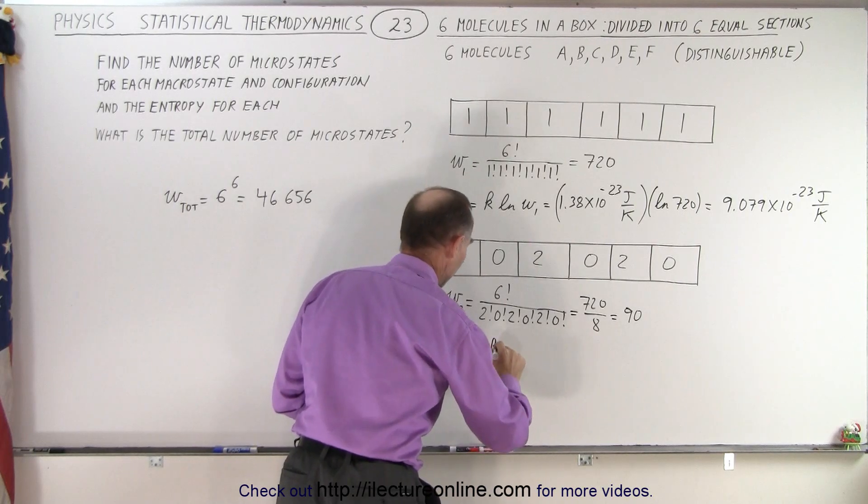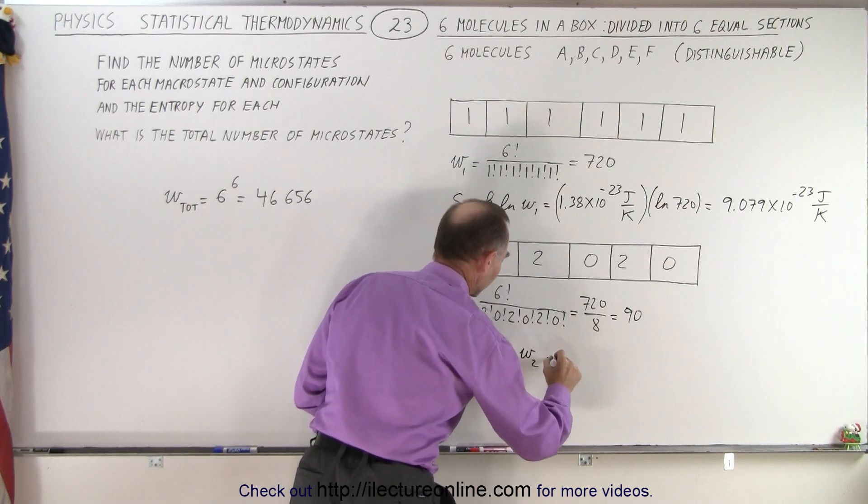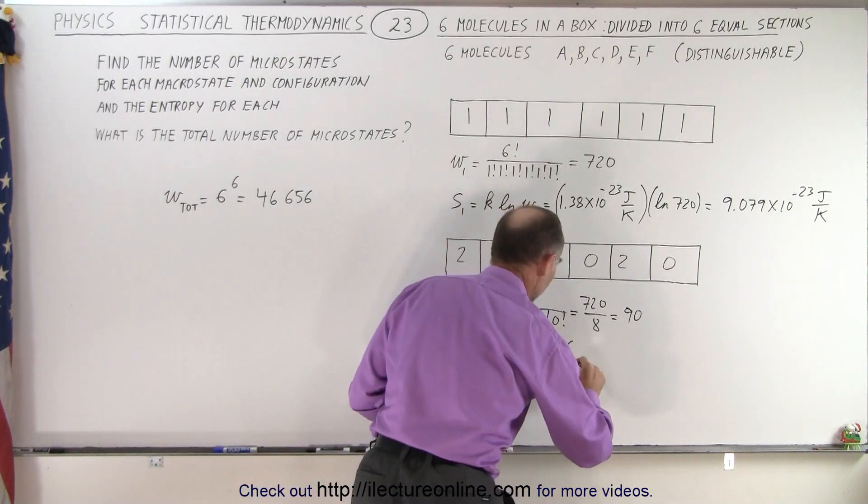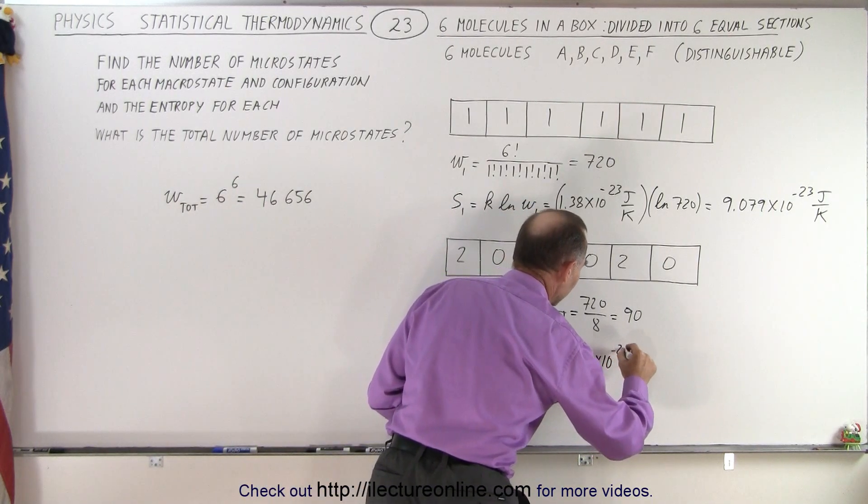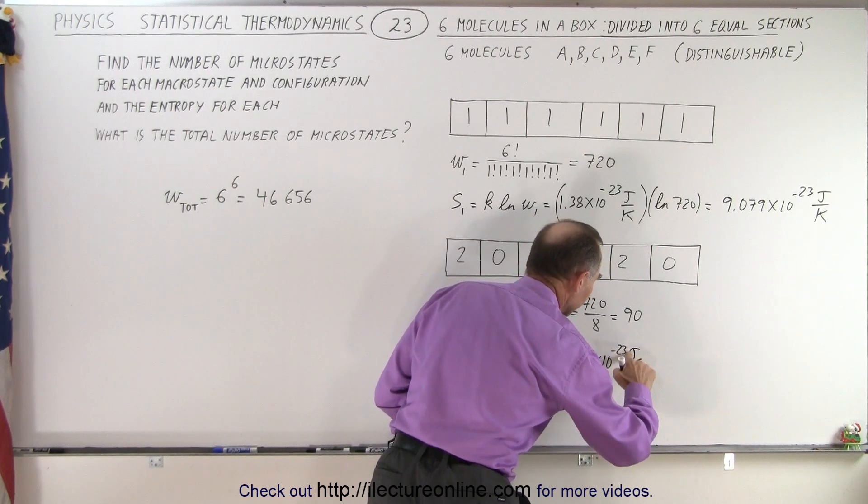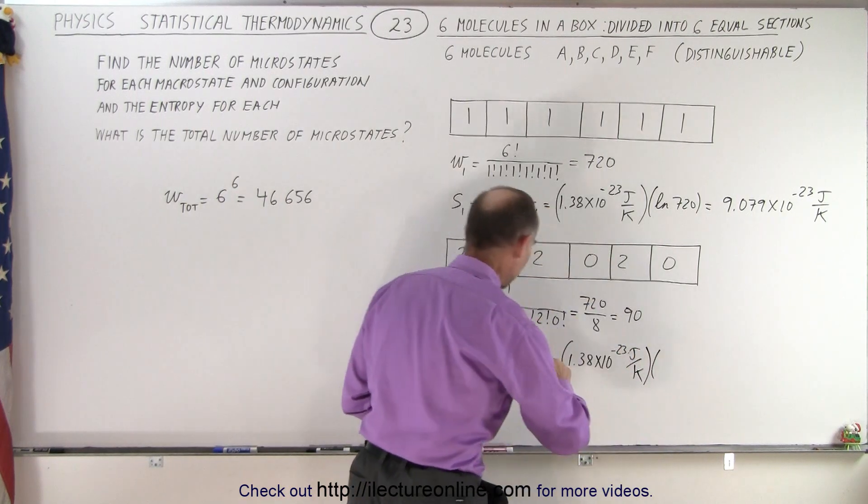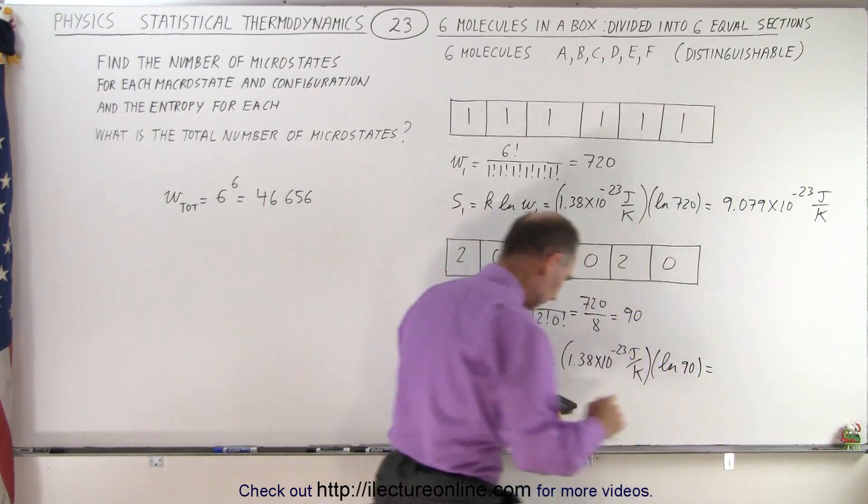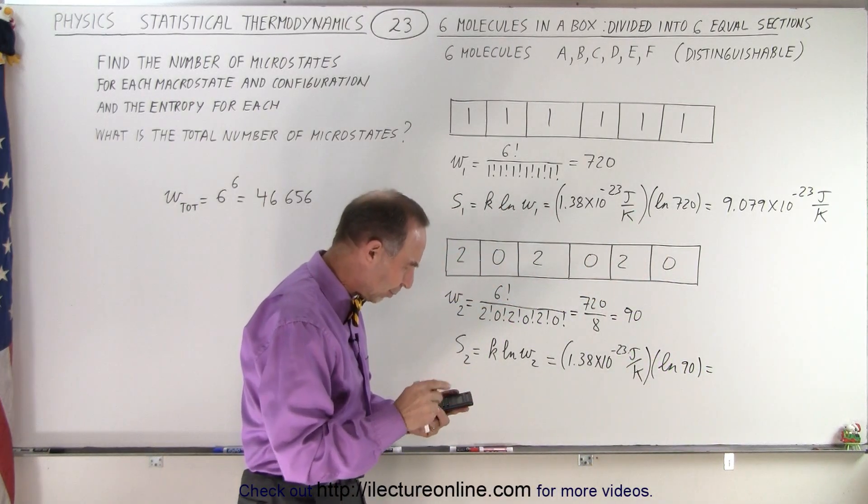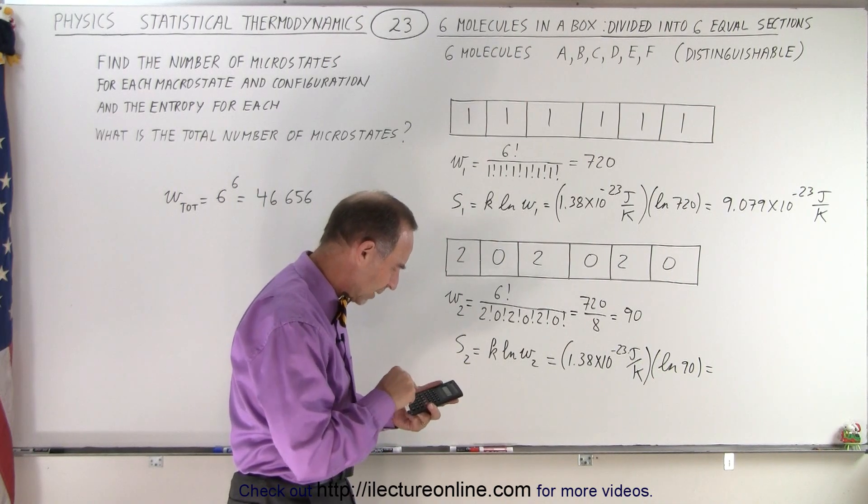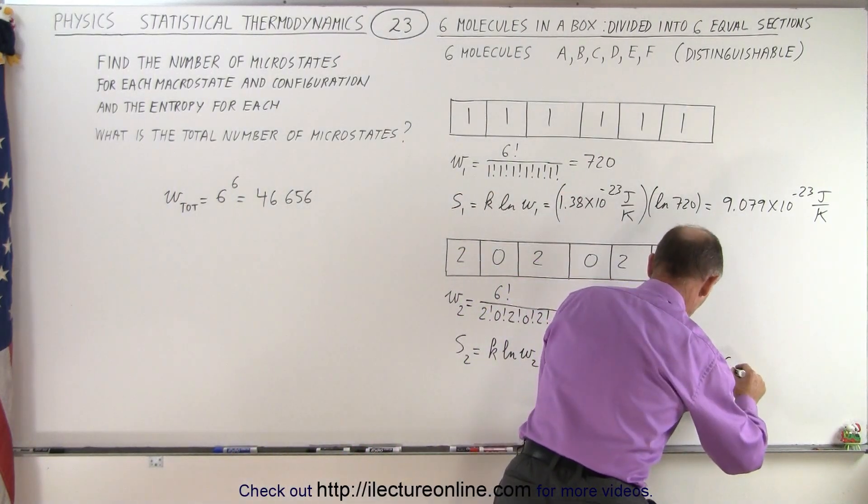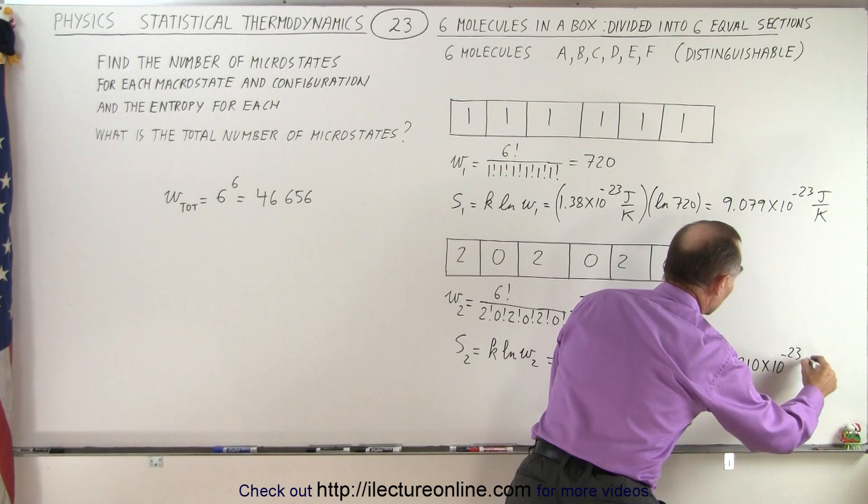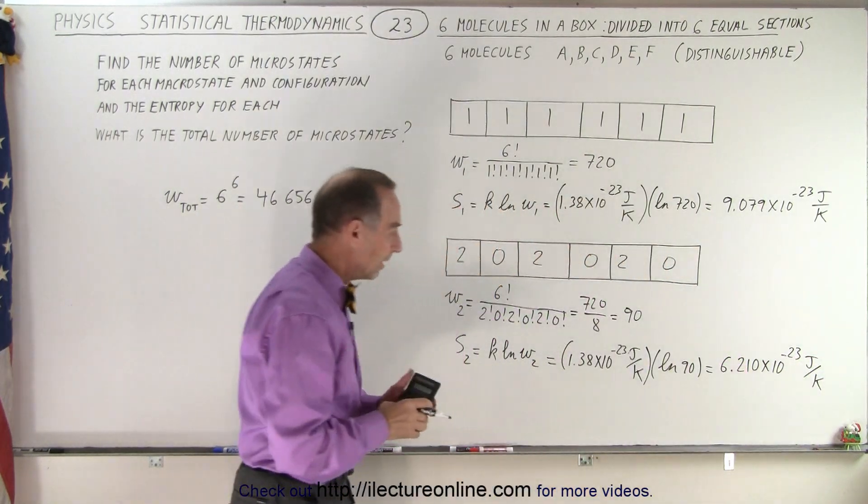And let's do it for this one right here, so S sub 2 is equal to K times the natural log of W sub 2. So that's equal to 1.38 times 10 to the minus 23 joules per Kelvin. And multiply that times the natural log of W2, which is 90. So take 90 natural log, which is about 4.5, and multiply that times 1.38 e to the minus 23, and that gives us 6.210 times 10 to the minus 23 joules per Kelvin.